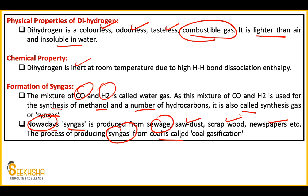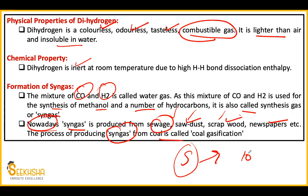Syngas is produced from sewage, sawdust, scrap wood, and newspaper. The process of producing syngas from coal is called coal gasification. Multiple questions can come from syngas: which two gases form syngas, which gases form water gas, from which sources can syngas be produced, what is coal gasification. On average we do ten questions in a video. You must do questions actively — just looking at the answer without attempting is the wrong approach and has no benefit.